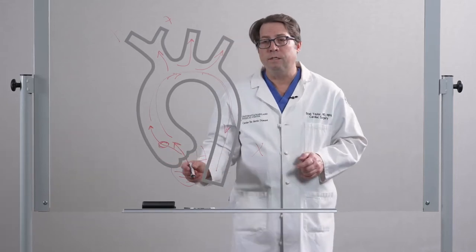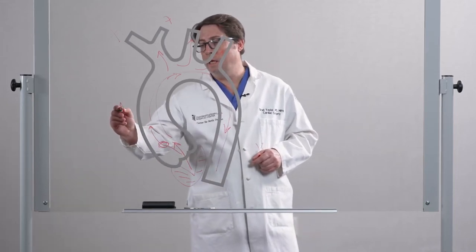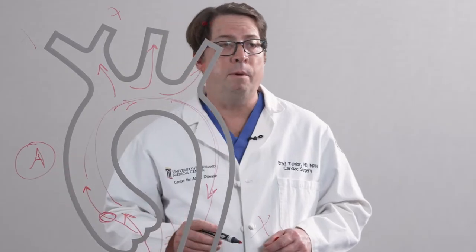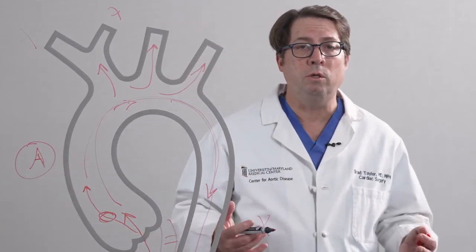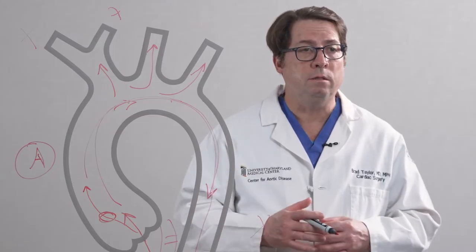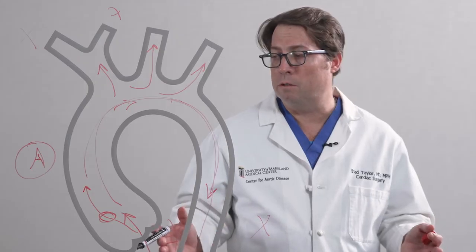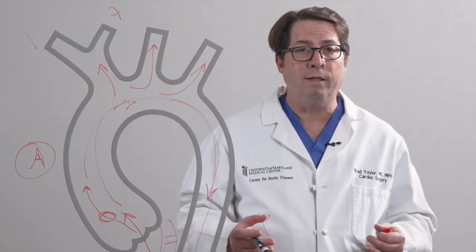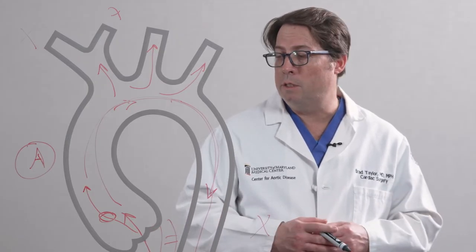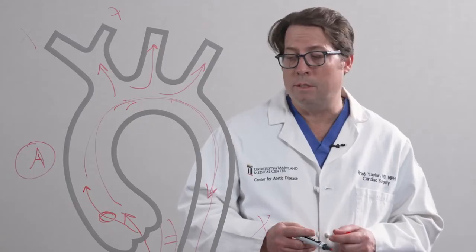If that tear occurs in your ascending aorta, we call that a type A aortic dissection. Type A aortic dissections are surgical emergencies. Ninety percent of patients don't even make it to the hospital if that occurs. Once they do arrive at the hospital, we take them emergently to the operating room in an attempt to save their life.